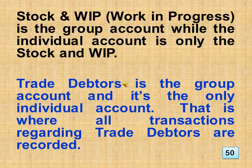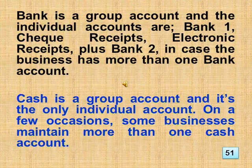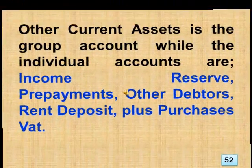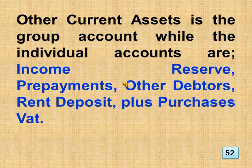Stock and work in progress is the group account, while the individual account is only the stock and WIP. Trade debtors is the group account and it's the only individual account — that is where all transactions regarding trade debtors are recorded. Bank is a group account and the individual accounts are: bank 1, check receipts, electronic receipts, plus bank 2 in case the business has more than one bank account. Cash is a group account and it's the only individual account. Other current assets is the group account while the individual accounts are: income reserve, prepayments, other debtors, rent deposit, plus purchases prepaid.